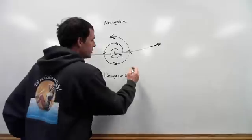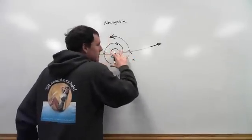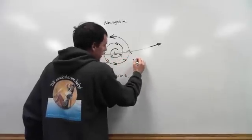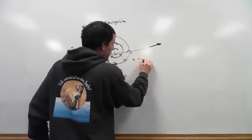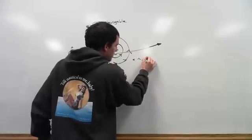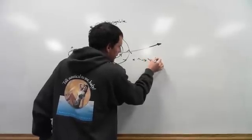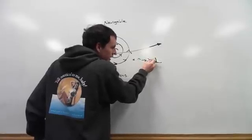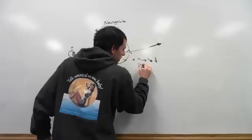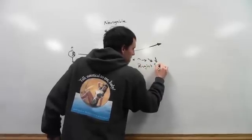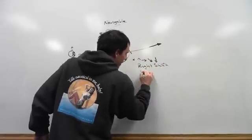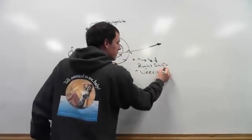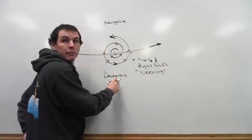And you're shifting to the right. So a right hand shift. If you're located here and the system passes you, you are going to get all of these winds, right? This wind, this wind, this wind, eventually this wind. This is a right hand shift. So it's a right shift or it's veering. And it's said to be veering. And this tells you, you are on the dangerous semi-circle.